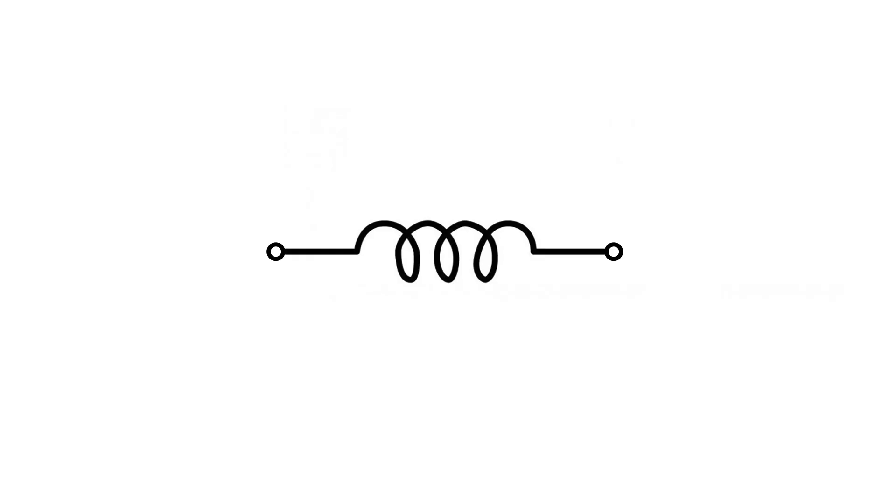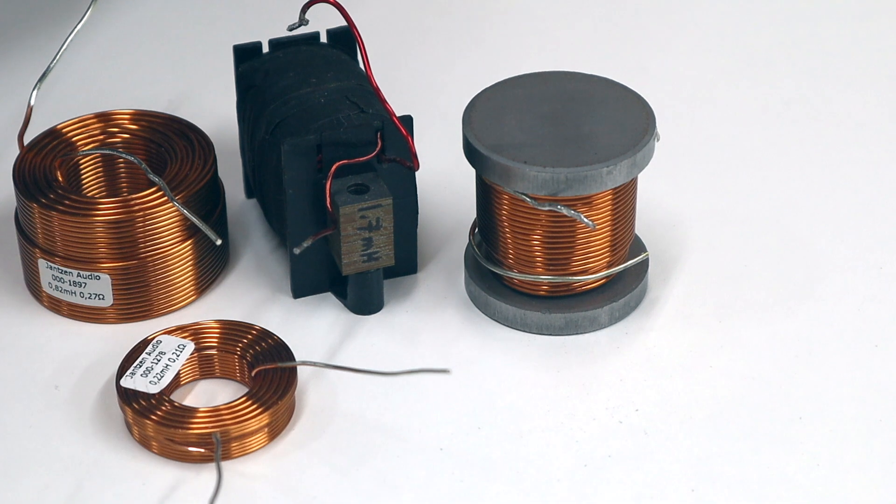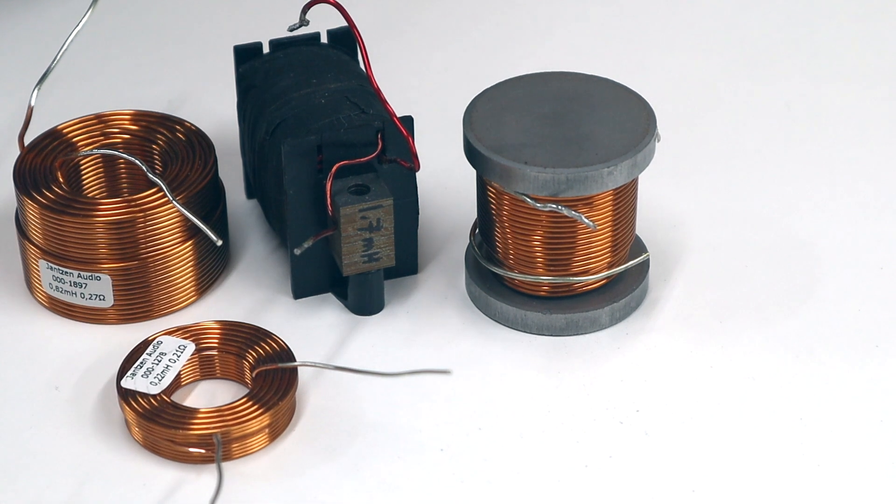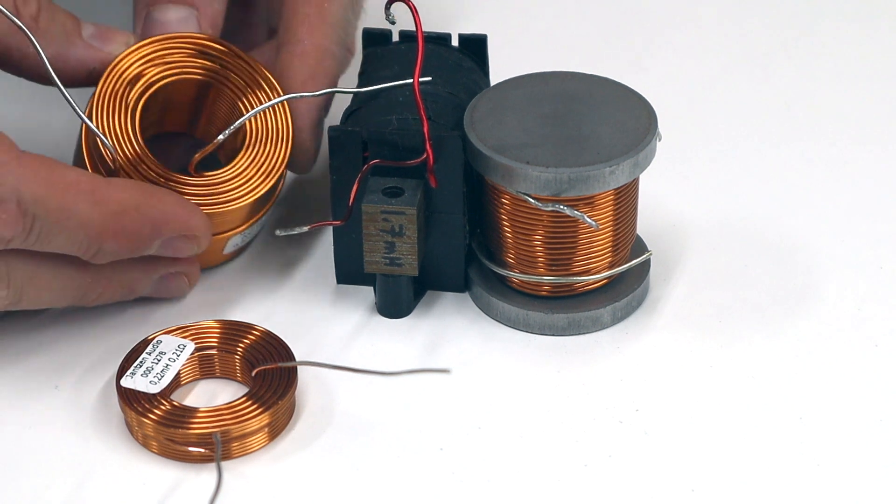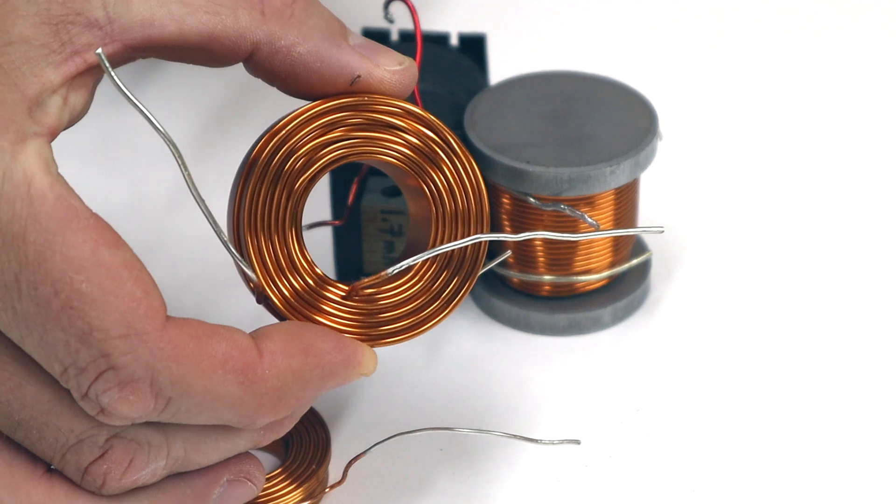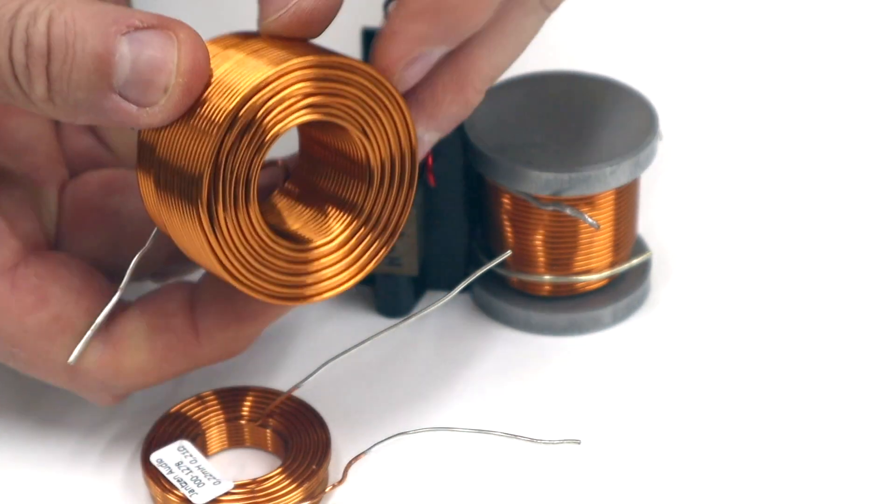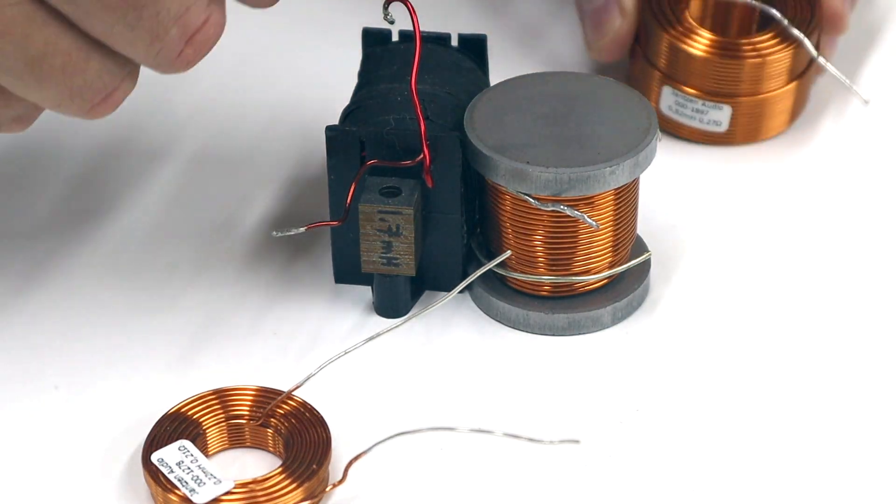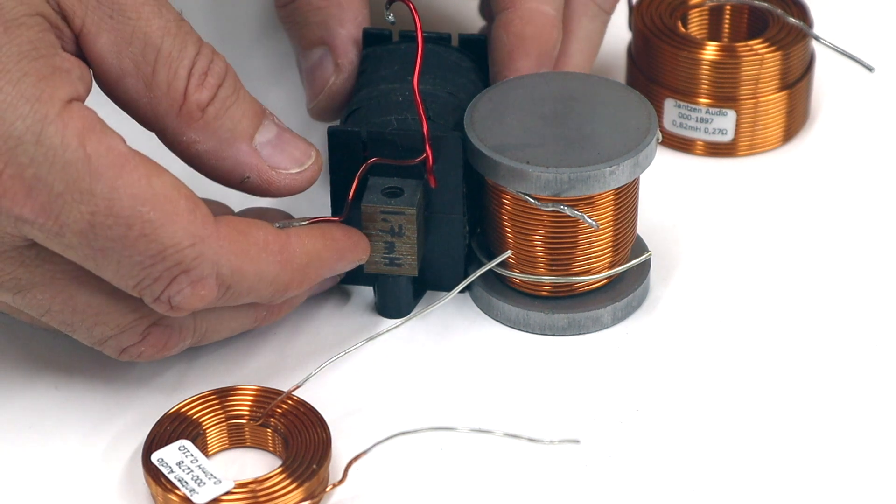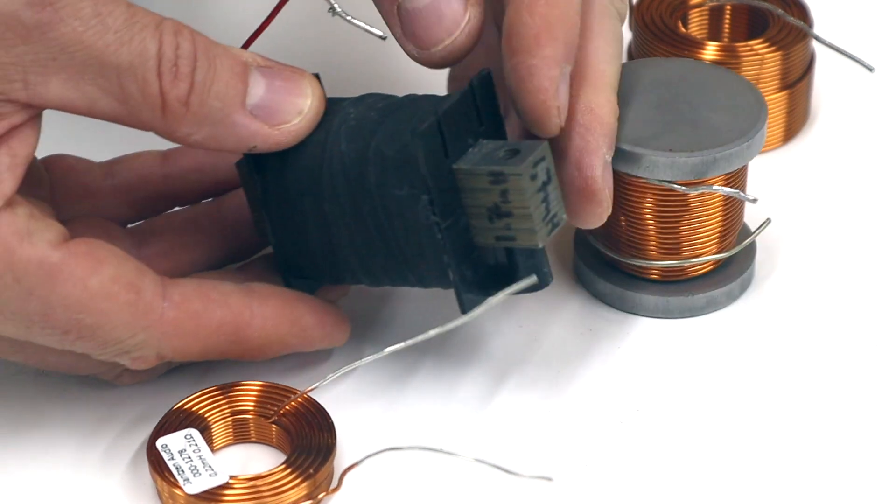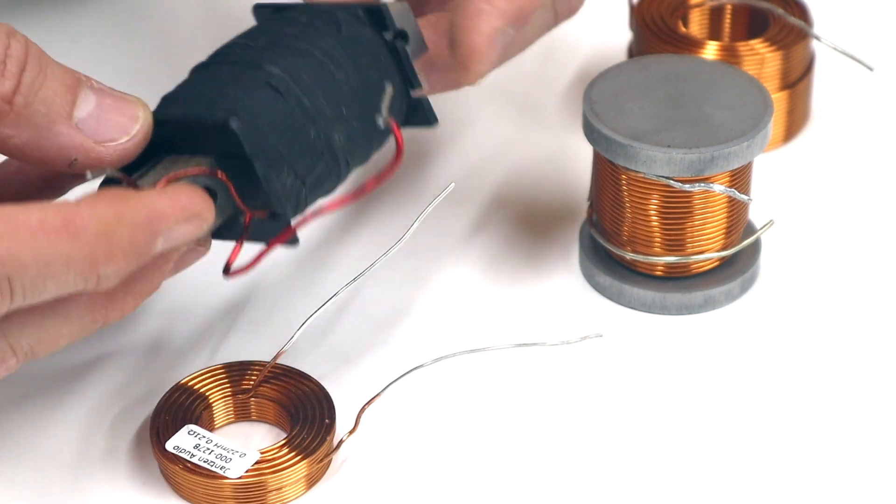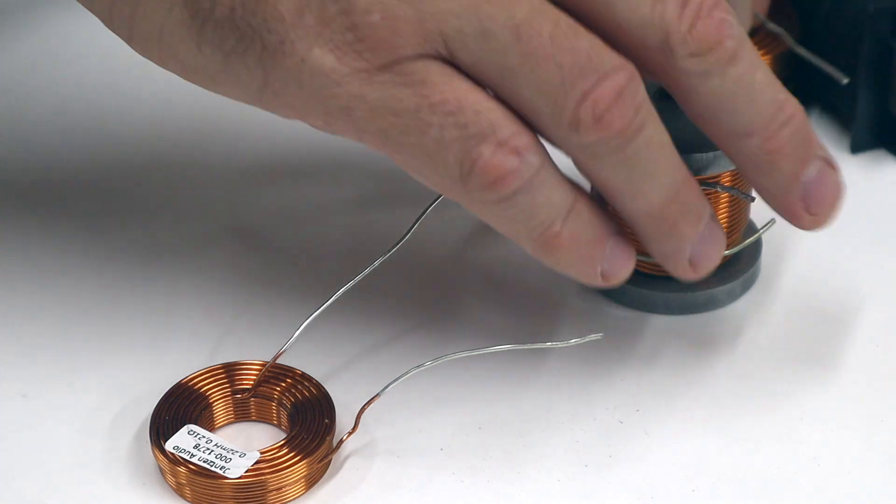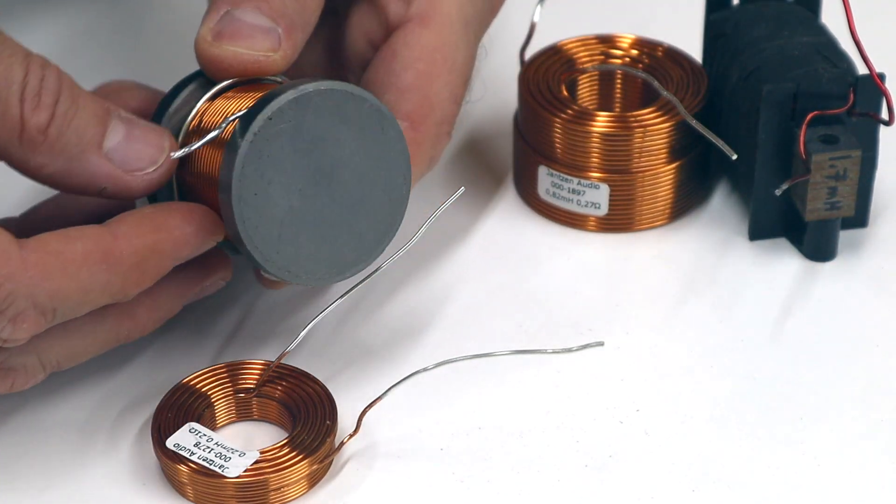Inductors or coils are indicated with this symbol and can come in various sizes and shapes or types. For example, here we have an air coil, this is a steel laminate coil, and this is an iron core coil.